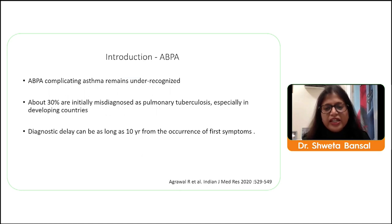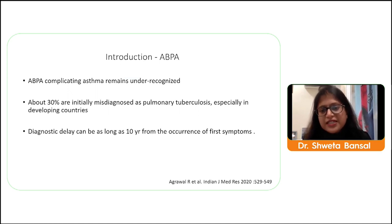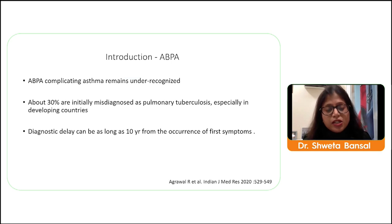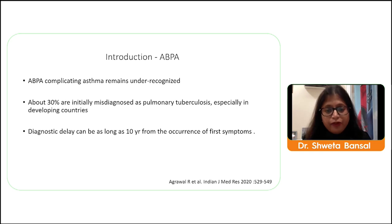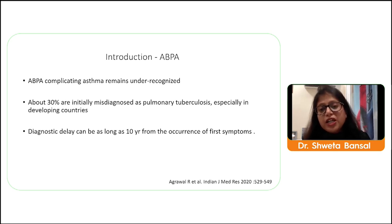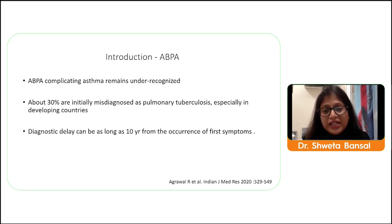As high as 30 percent of these patients are misdiagnosed as pulmonary tuberculosis because of overlapping constitutional symptoms. Even in asthma patients, many go undetected for as long as 10 years, ending up with type 1 or type 2 respiratory failure and complications of ABPA. Early recognition is very important, and screening at the OPD level — at initial stages 0 or 1 — is critical.